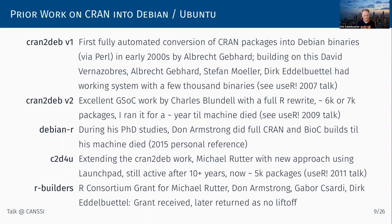We had a useR! 2009 talk. Don Armstrong, a PhD in bioinformatics, built a complete archive of CRAN and Bioconductor during his grad student and postdoc days. I know Don via Debian — he's a much more important Debian maintainer than I am. That worked well and he had a strong machine with proper RAID mirroring, but the disks melted and they never got back to rebuilding it. A parallel effort still exists by Michael Rutter from Penn State, who picked up some of the earlier scripts and made them use Ubuntu's Launchpad build service, but it's still partial — covering about a third of CRAN.